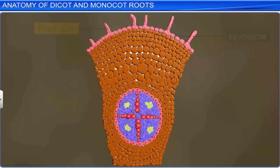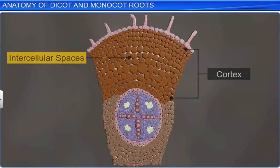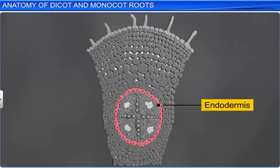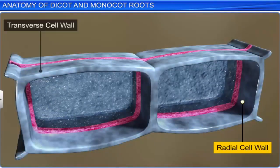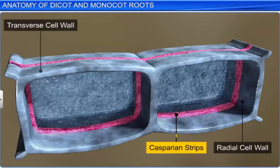The epidermis is followed by cortex, which is formed of several layers of thin-walled parenchymatous cells with intercellular spaces. The innermost layer of the cortex comprises barrel-shaped cells without any intercellular spaces. This layer is known as the endodermis. The tangential and radial walls of the endodermal cells have deposits of a water-impermeable material called suberin, also known as Casparian strips. Suberin is a waxy, waterproof substance present in the cell walls of the cork tissue in plants.